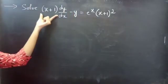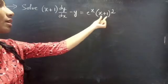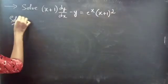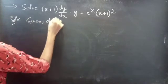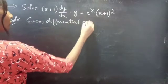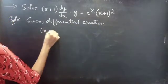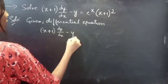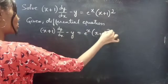Problem: Solve (x + 1) dy/dx − y = e^x (x + 1)². Solution. Given differential equation: (x + 1) dy/dx − y = e^x (x + 1)².